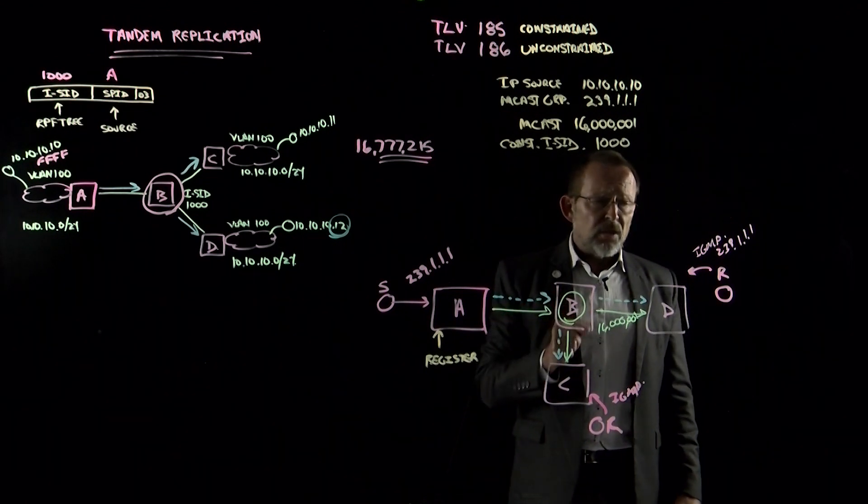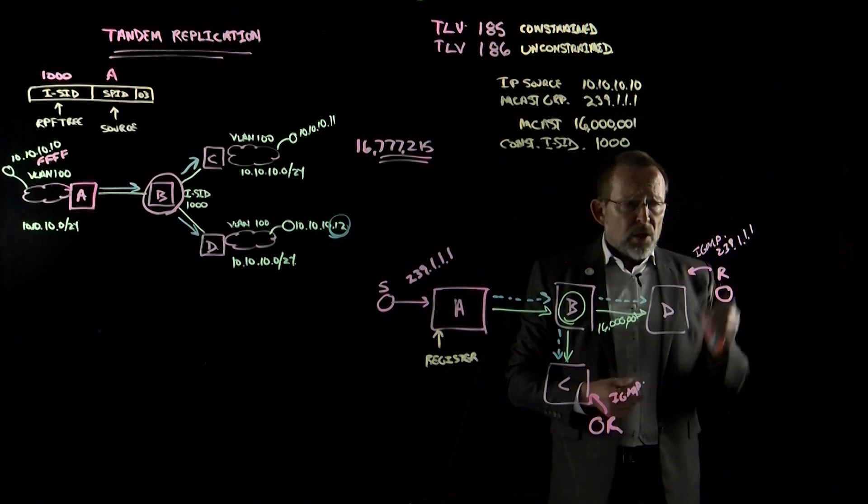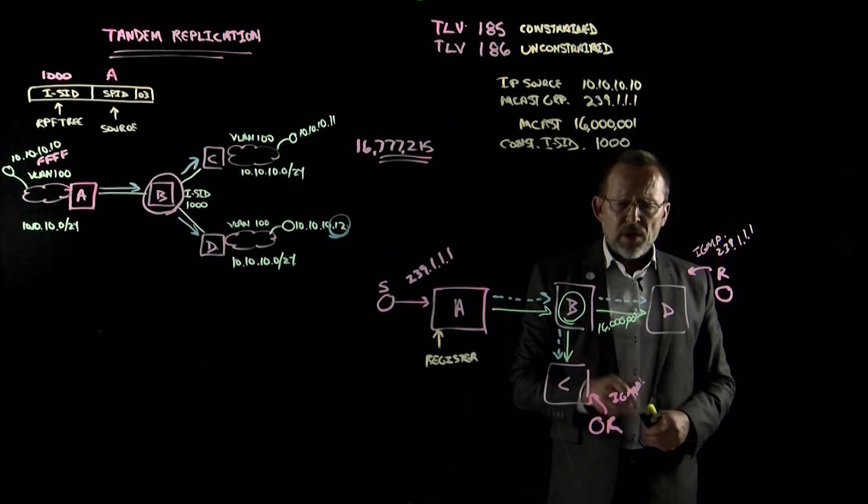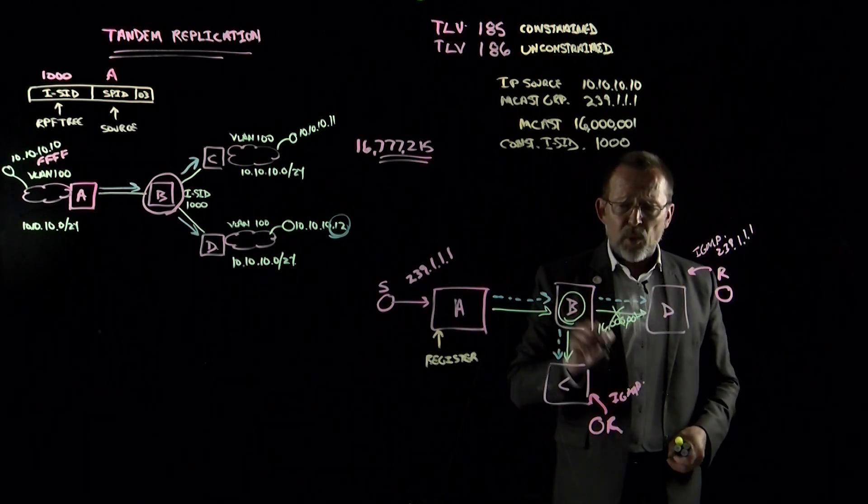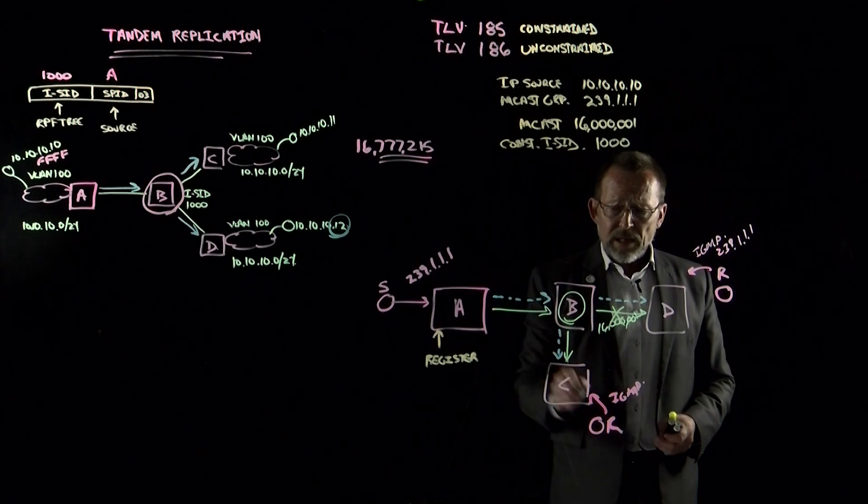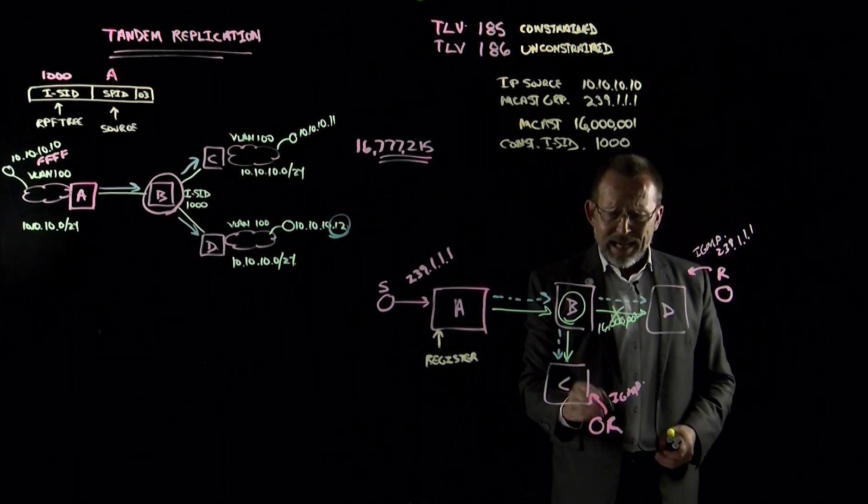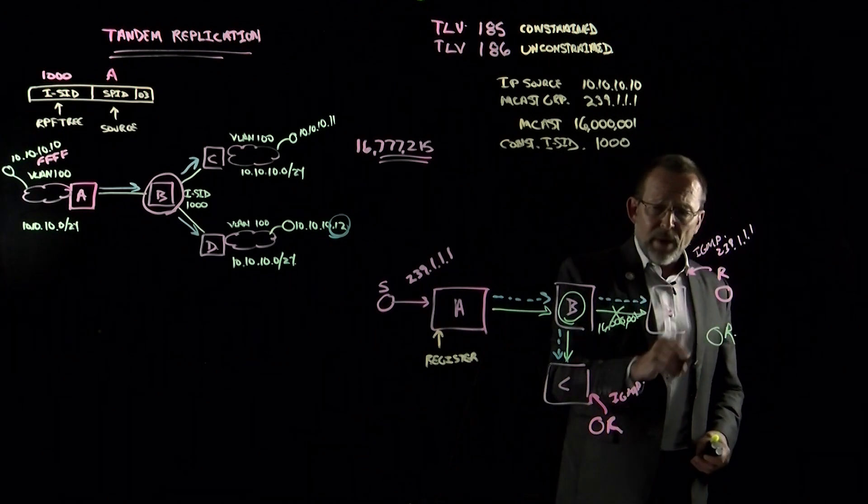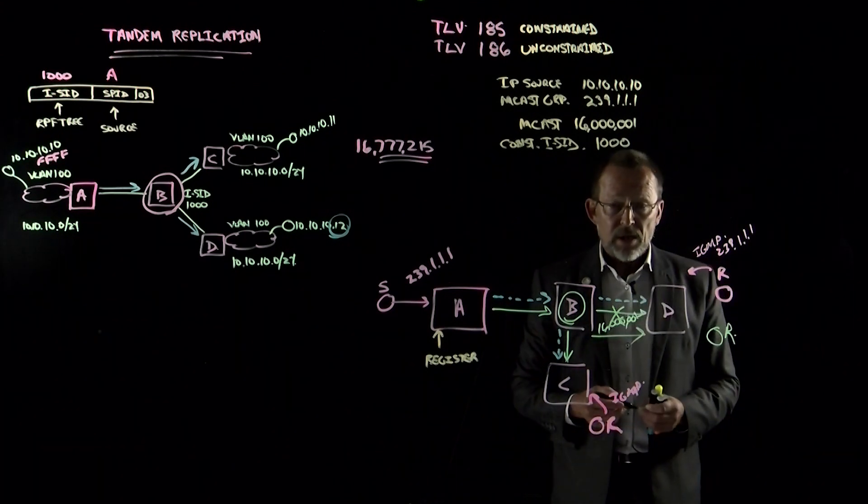The other thing to realize is that IGMP actually allows leaving as well. So if we were to receive a leave from one of these stations, then the ISID is simply retracted back to the next point of replication. Notice how the ISID is still flowing down to the receiver hanging off of switch C. And then if another receiver came in and actually requested that through IGMP, we would re-extend the ISID out for that new solicitation.